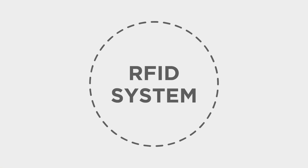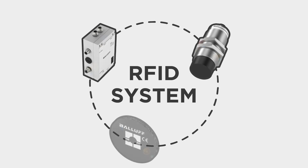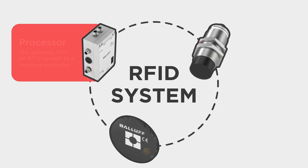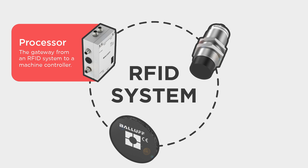Now that we've covered the different types of frequencies, let's talk about the hardware. Every RFID system consists of three components: a processor unit, a read-write head, and a tag. Starting with the processor unit — simply put, this is the gateway between your RFID system and your machine's controller. It converts the data read from tags for the controller to use, along with sending data through the read-write heads to write to the tags. These are offered in various styles with added functionalities depending on what your application needs.